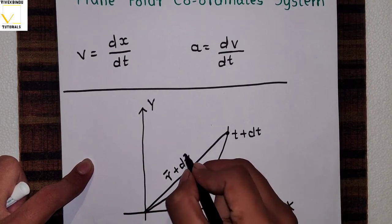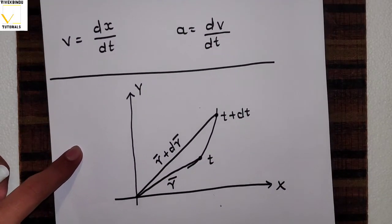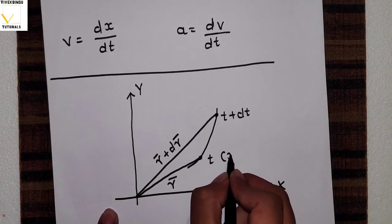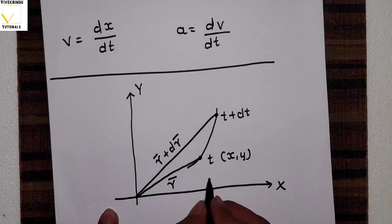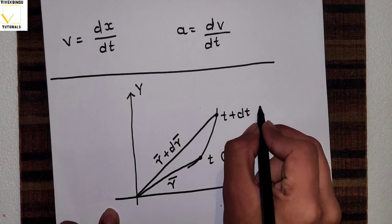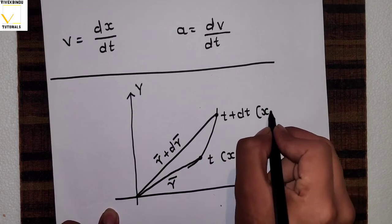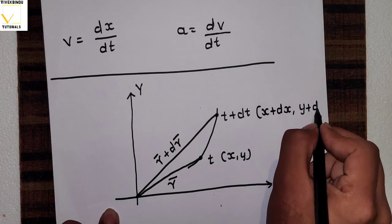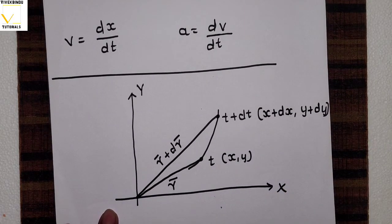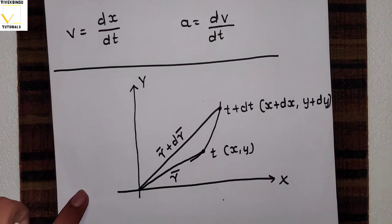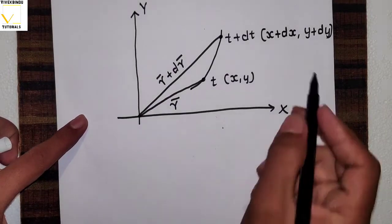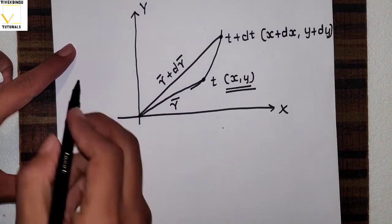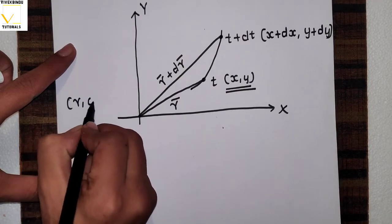In the Cartesian coordinate system we represent the position of a particle using coordinates x and y. At time t the particle has x and y coordinates, and after some time t plus dt its coordinates will be x plus dx and y plus dy. This is how we represent the motion of a particle in the Cartesian coordinate system. Now for the plane polar coordinate system, instead of x and y we will use r and theta.